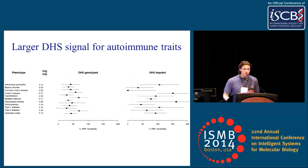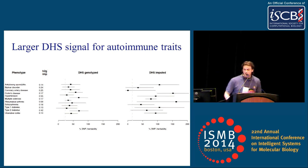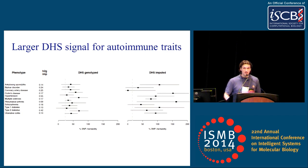Getting back to autoimmune traits: six of the 11 traits are autoimmune, and the signal we observed was larger for them — over 5.5-fold DHS enrichment for autoimmune traits, while closer to a bit more than 3-fold for non-autoimmune traits. The difference is statistically significant. For each individual trait the standard errors are quite large in the imputed analysis, so it's only in the meta-analysis where you have interesting conclusions.